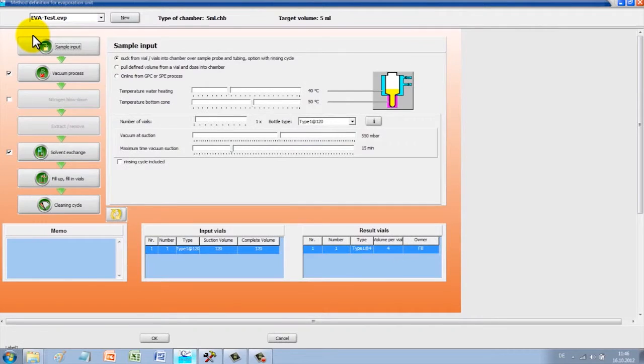Part two is for the area of method setup and mimics the manual process. This is detailed in such a way that even complex procedures are displayed in a simple manner.